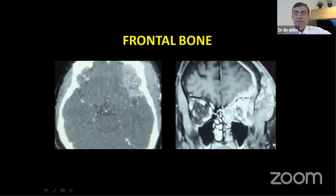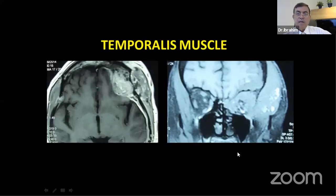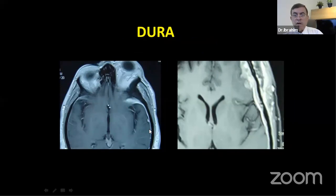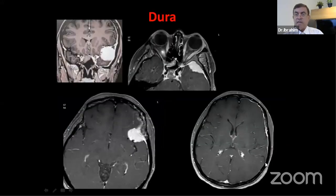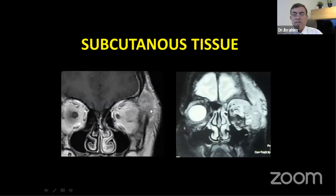Temporal bone involvement, temporalis muscle invasion — I show you this so we do not underestimate these meningiomas. Lots of junior neurosurgeons think of meningiomas as benign, but they are difficult to treat and you cannot underestimate their aggressiveness once left untreated. There is always a long dural tail which must be removed during surgery.